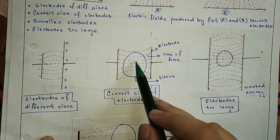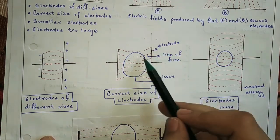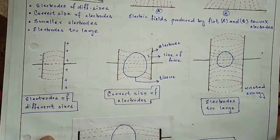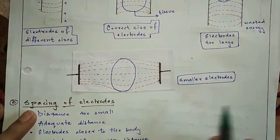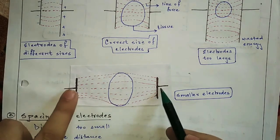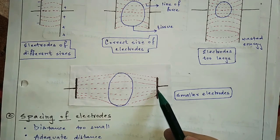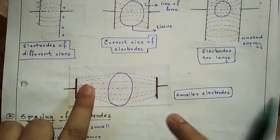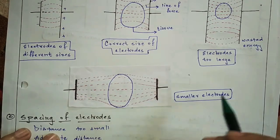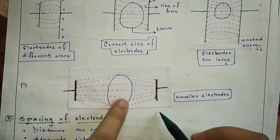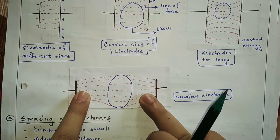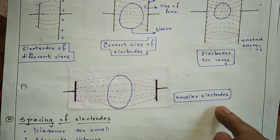The correct size of electrode is important — it should not be too large. If the electrode is smaller than the body part being treated, the concentration of the electric field will be more in the superficial part and less in the deep structure. As a result, deep heating will be insufficient. So the electrode should not be smaller than the body part.